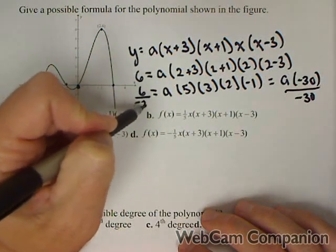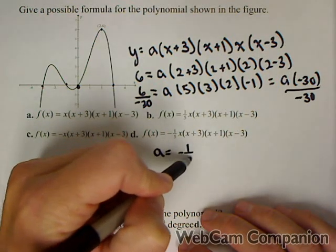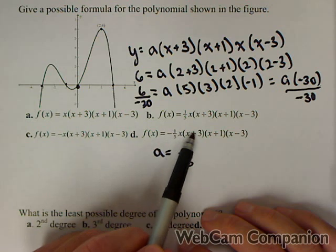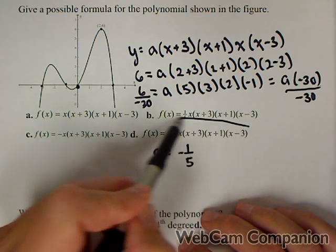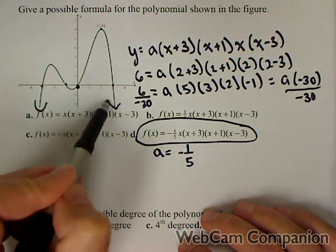what we get is that a has to be negative one-fifth. So we need the one with all those four factors: x, x plus three, x plus one, and x minus three, and a coefficient of negative one-fifth. We also know it has to be negative because both ends open downwards.